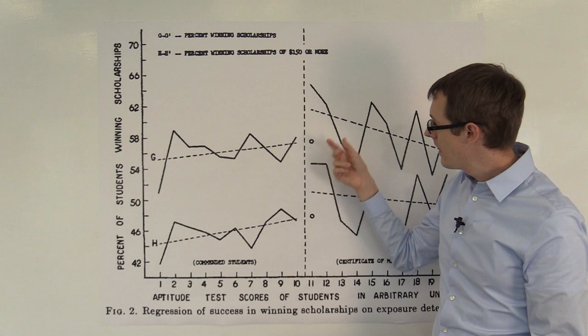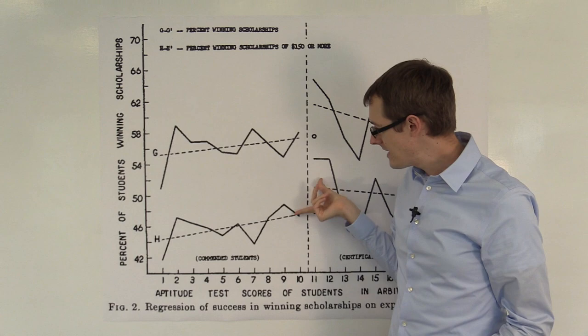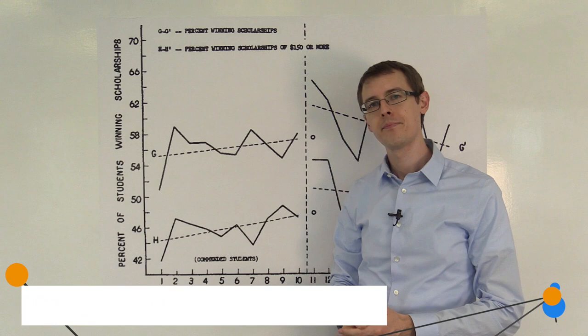So, that's one result. And then we see the same thing is true for overall scholarships, not just for the high-paying ones. That there's this discontinuity of roughly 5% to 6% of students. And that difference there at the boundary, at the cutoff, is our estimated treatment effect.